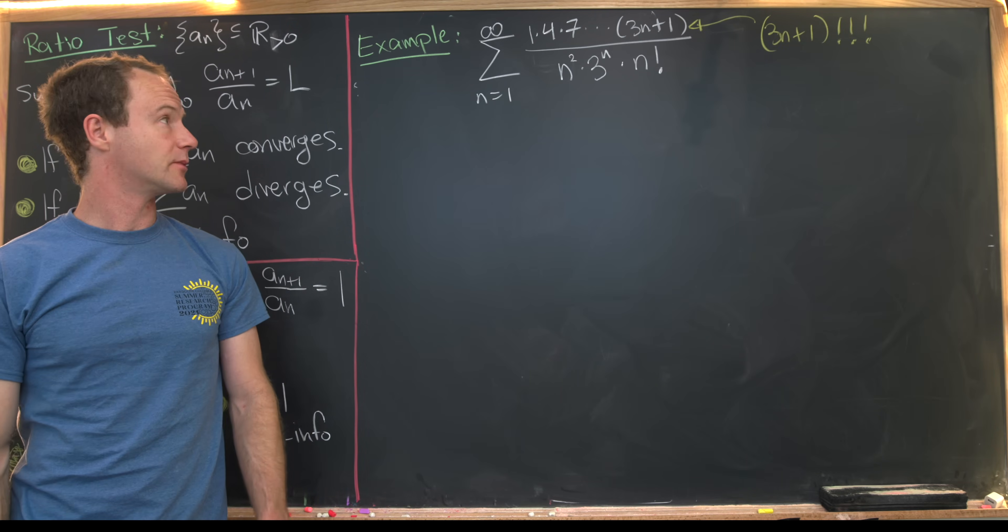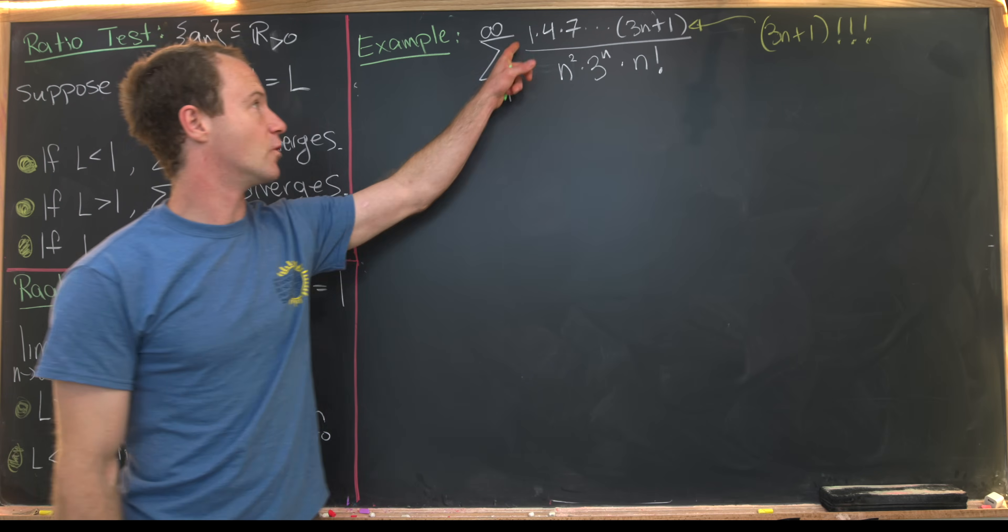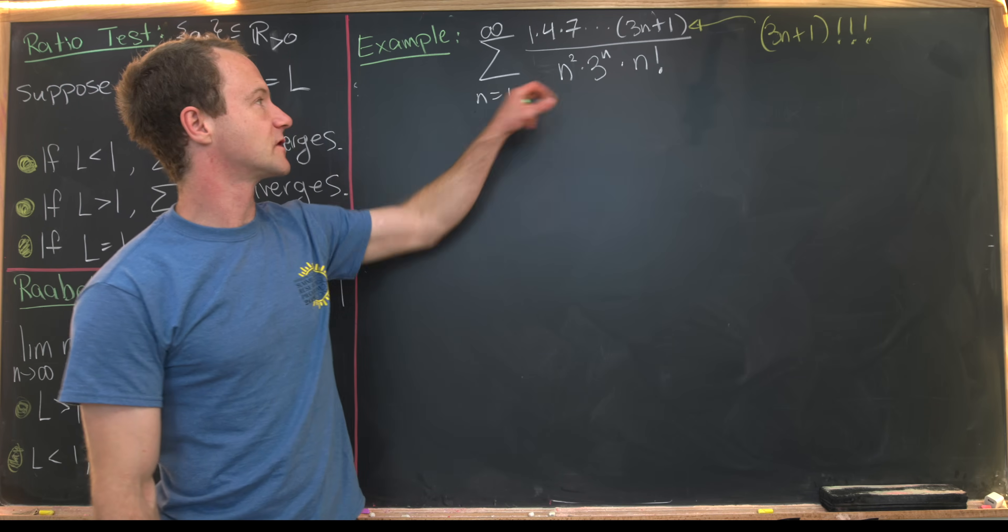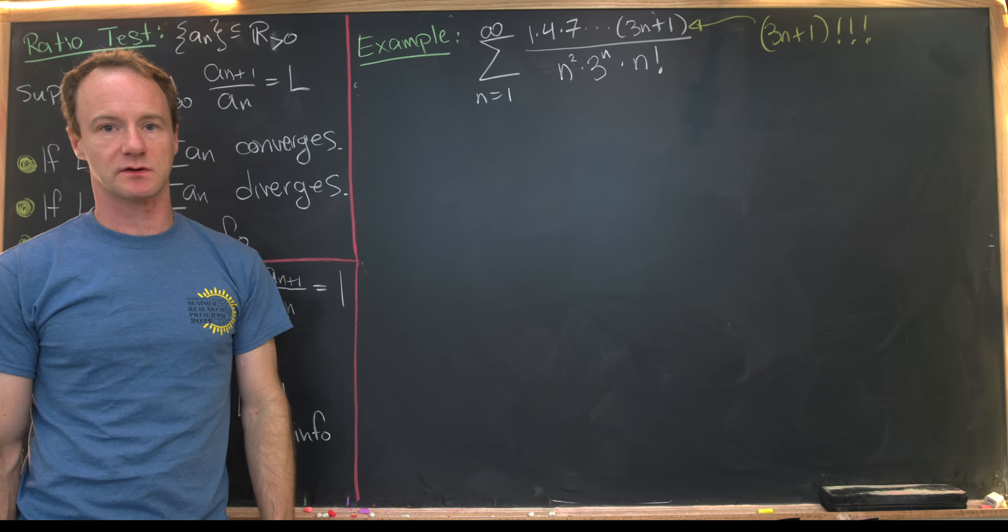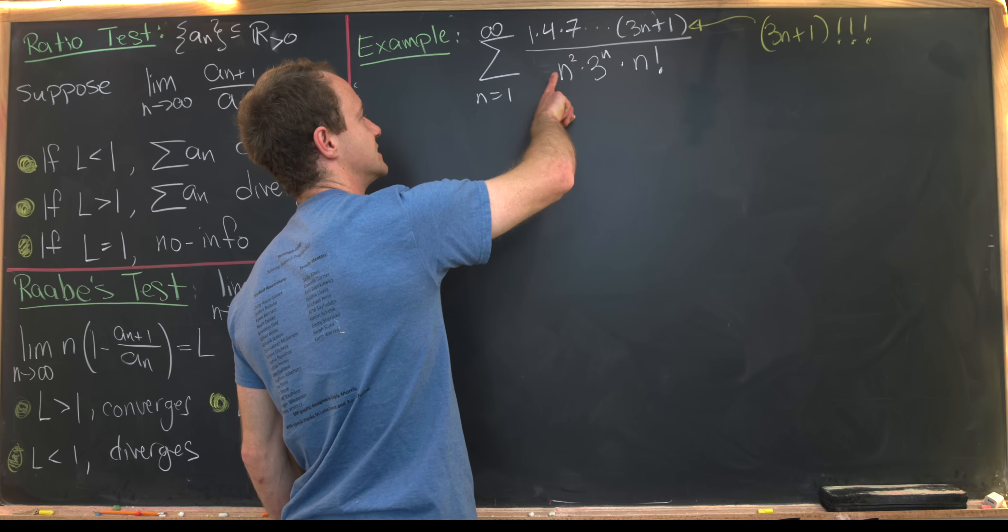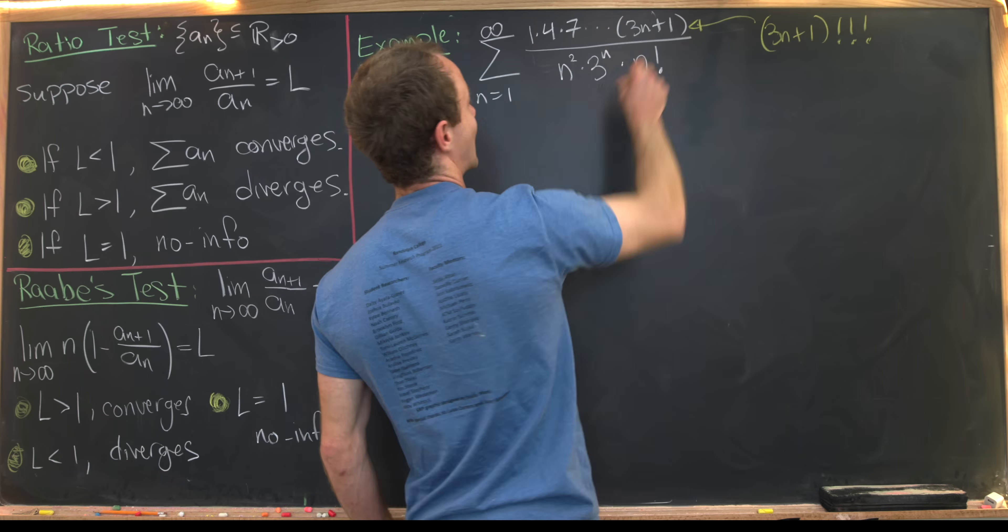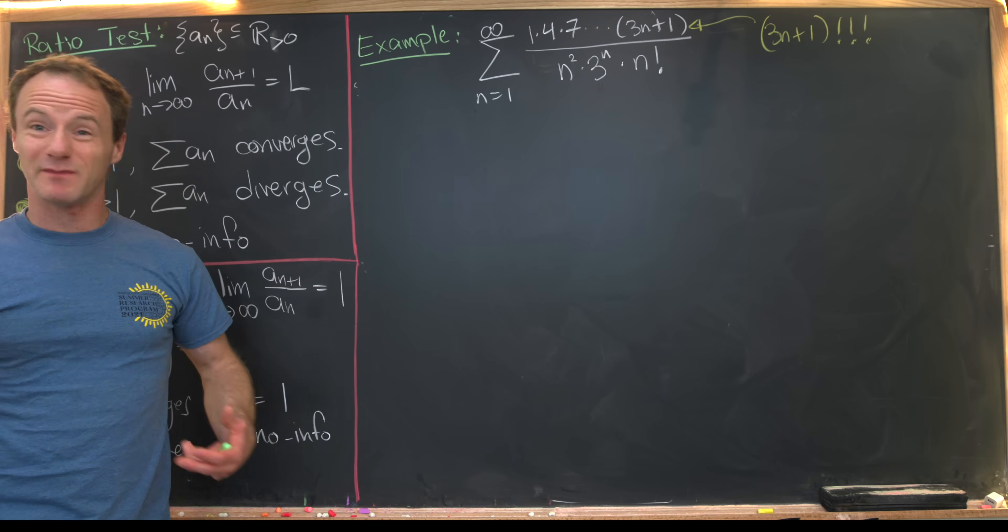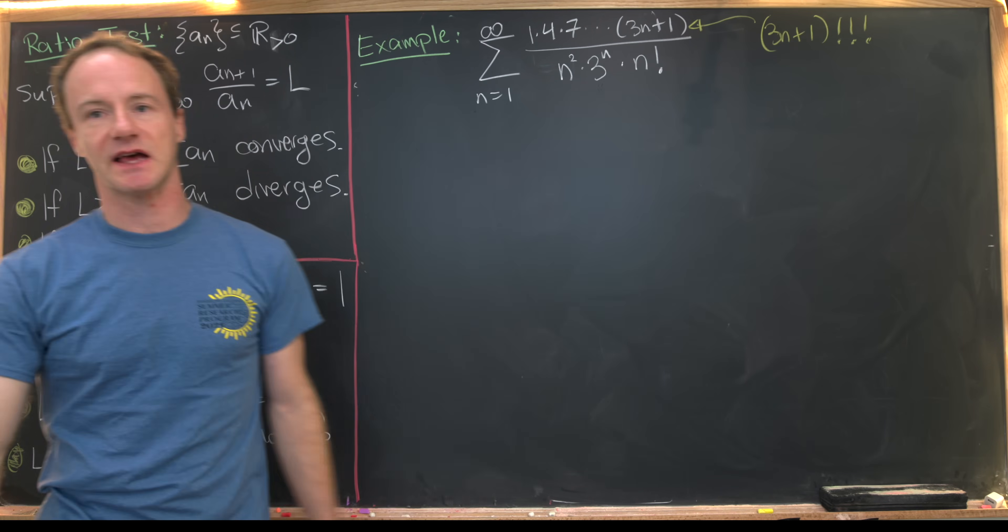So like I said, now we're going to do an example. We've got the sum as n goes from 1 to infinity of (1·4·7···(3n+1))/(n²·3^n·n!). And I want to point out here that we've got a combination of something like a p-series, so this is n², something like a geometric series, (1/3)^n, and then factorial type things. And so this combination of all of these different things really points us towards this being a good test.